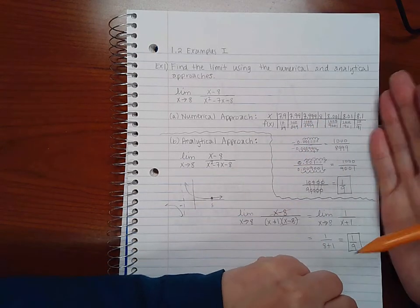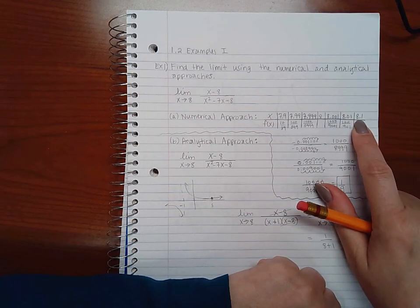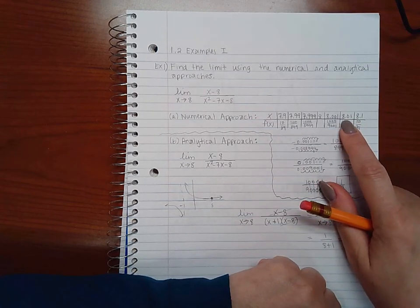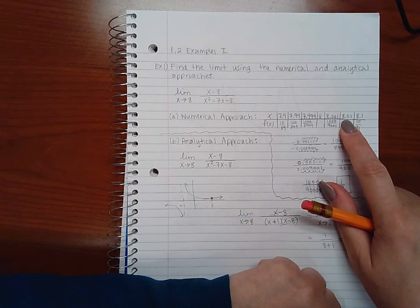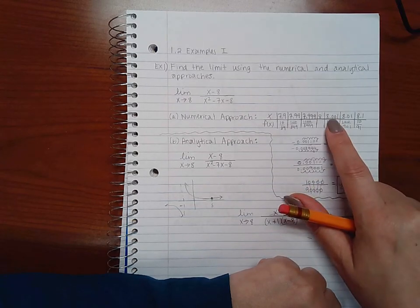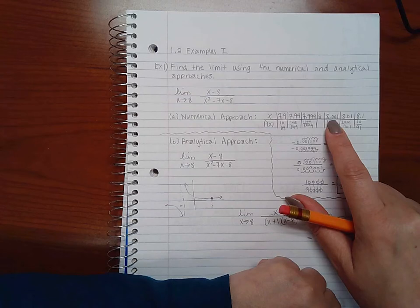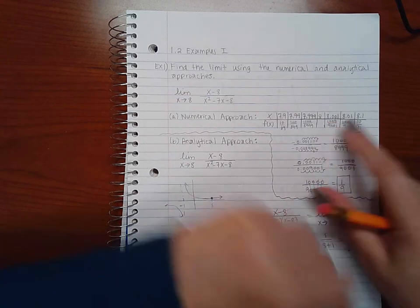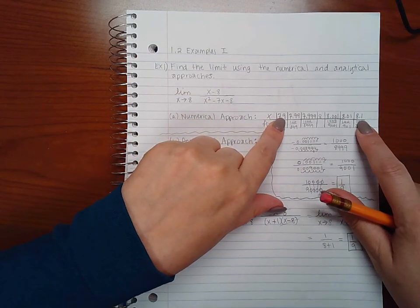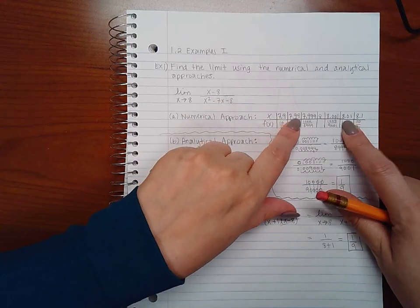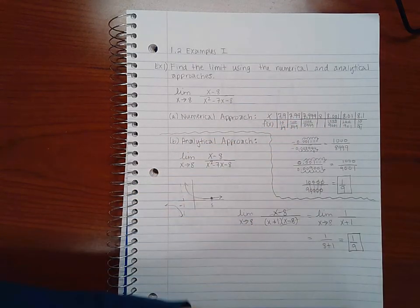Now from the right hand side, 8.1 is pretty close to 8. I can get even closer still by doing 8.01, and I can get even closer by using 8.001. So I'm real close to 8 on both sides of it, getting even closer and closer as I approach 8.